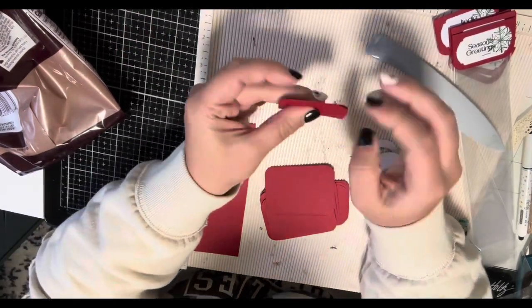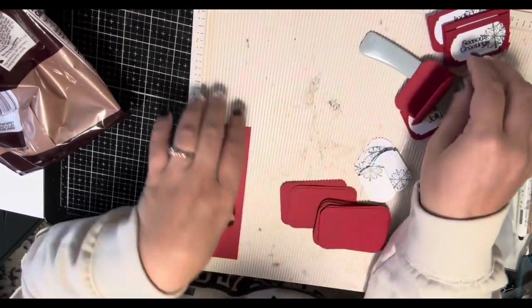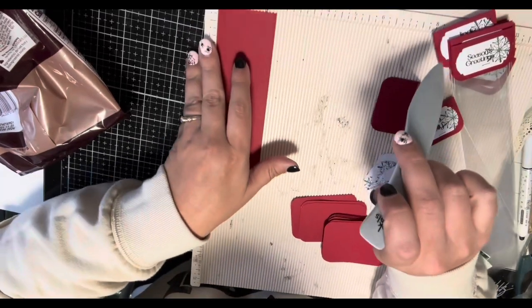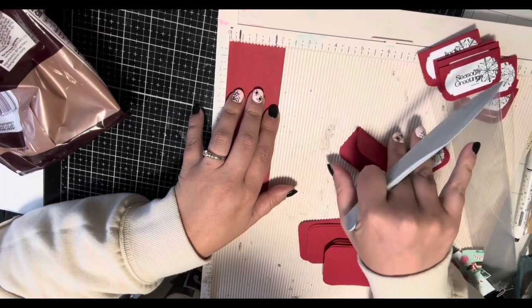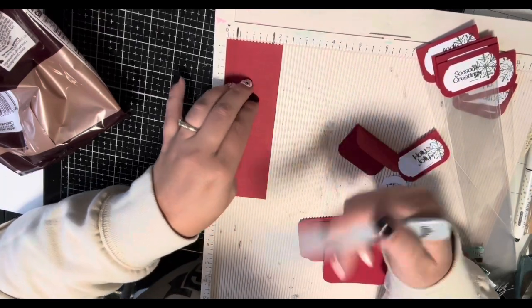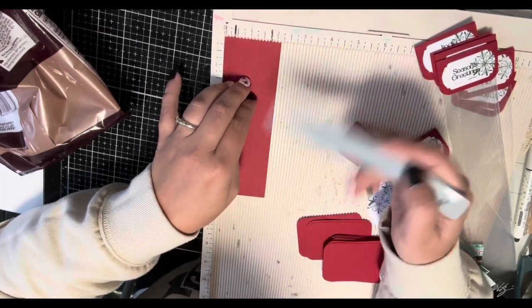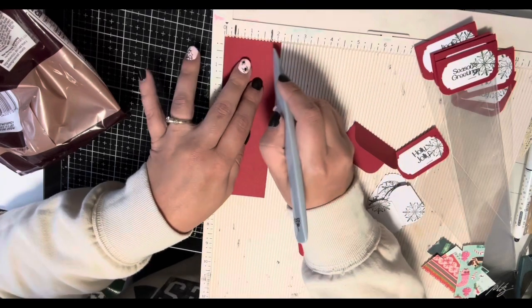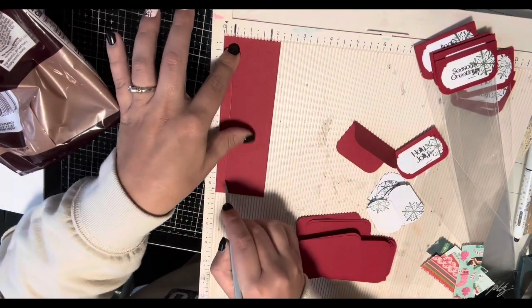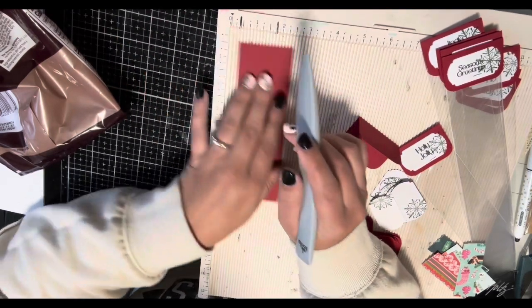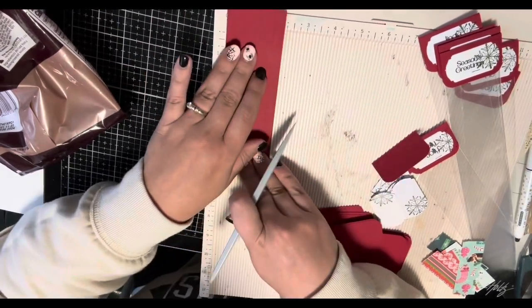Get these all scored and ready to go. Then you're going to want to score your box. I actually put marks on here because it would be easier for me to find it and do it like a conveyor belt. You score at 3/8 of an inch on each side.